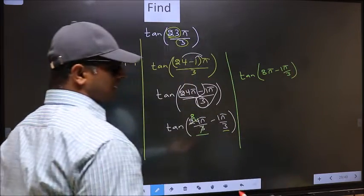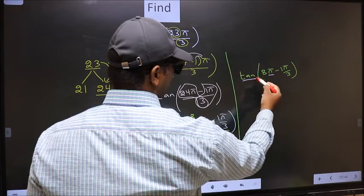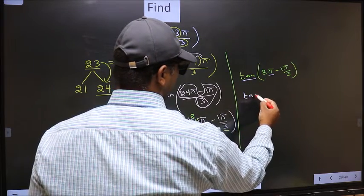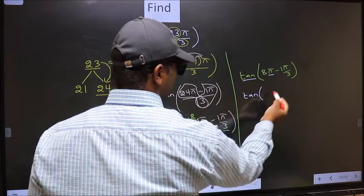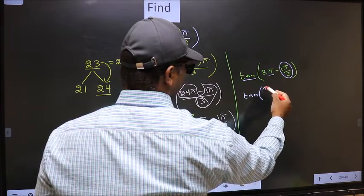Next, here we have π, so tan is not going to change. It will remain tan, and inside we get the angle π by 3.